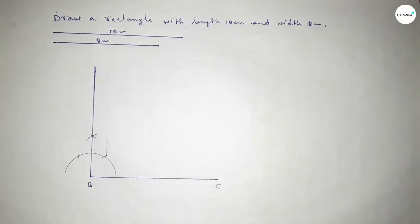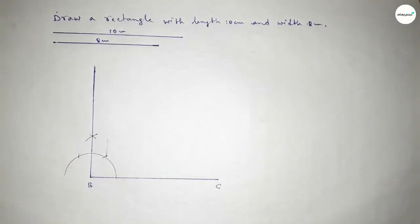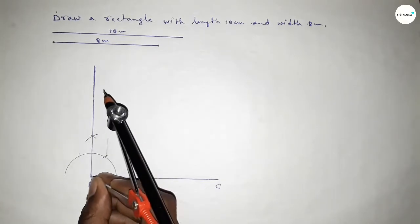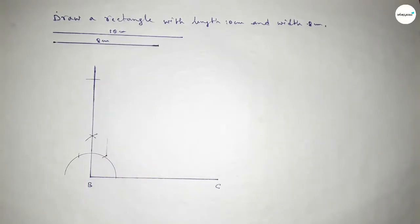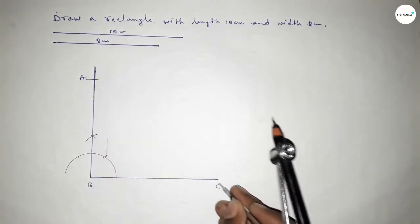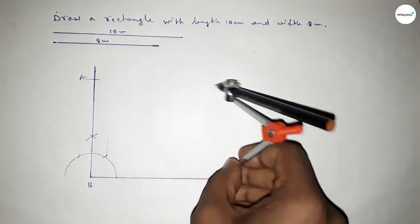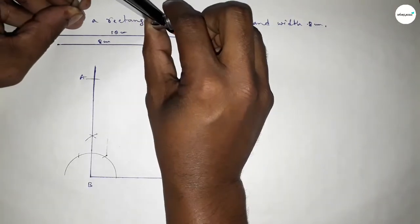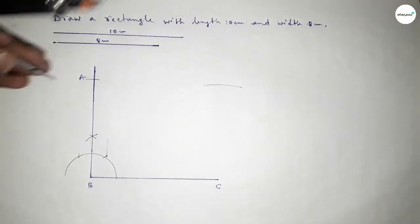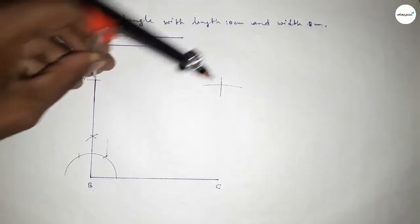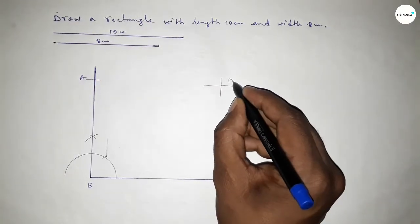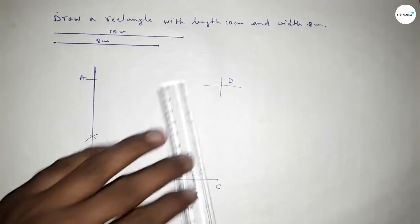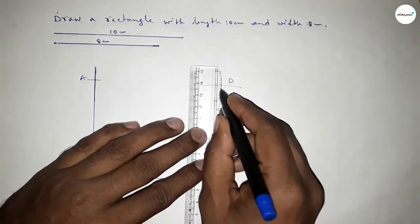Joining this side to get a 90 degree angle. Now taking the length 8 centimeter, putting the compass here and cutting here, taking a point. With the same length, putting the compass here and drawing an arc. Now taking the length 10 centimeter using the compass, putting the compass here and cutting here, so both curves intersect at a point D.